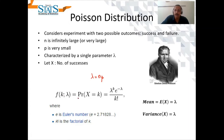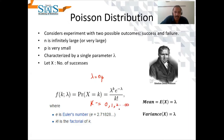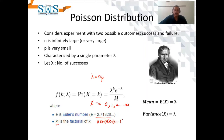In the Poisson mass function, K can range between 0, 1, 2, up to infinity. E is Euler's constant, and K factorial means K into K minus one into K minus two, and so on, multiplied up to one. The nice thing about this distribution is that the mean and variance are both equal to lambda.